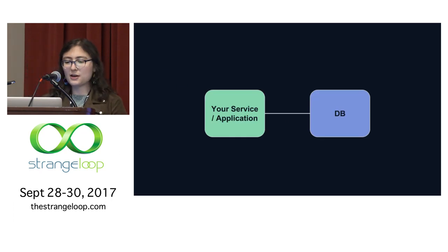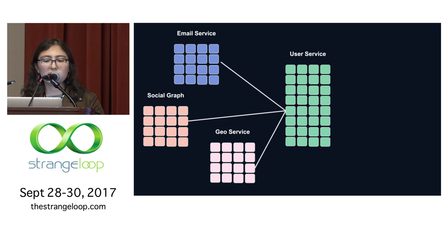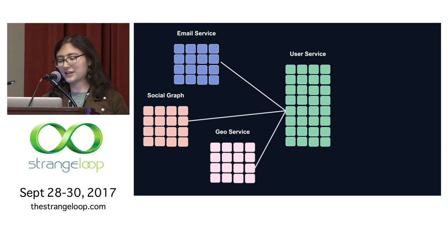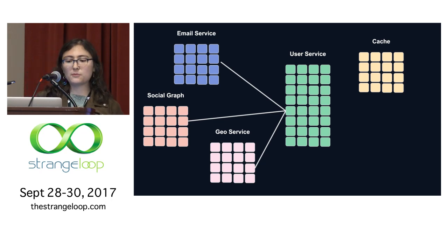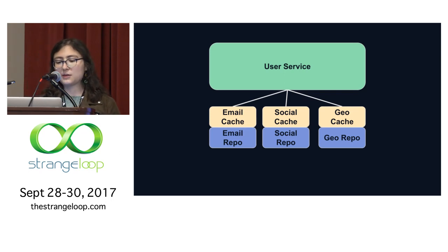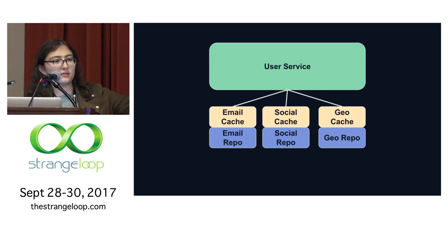Our real architecture is nothing like the simple diagram. The user service has over a dozen backends: the email service, social graph service, geo, plus our own databases — none running on a single instance. And we have our own cache cluster with many instances. In code, we group things logically — an email cache, a social graph cache — even though it's all the same physical cache cluster.